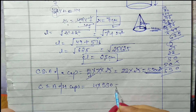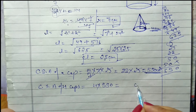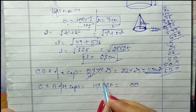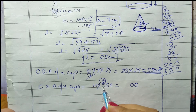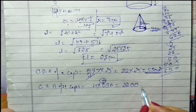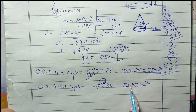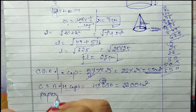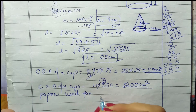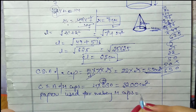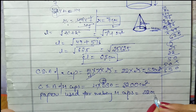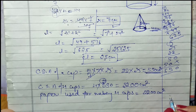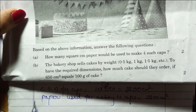4 × 550 = 2200 cm². To yeh raha curved surface area of 4 caps. Itna paper use hoga 4 caps ko banane ke liye. Paper used for making 4 caps = 2200 cm².